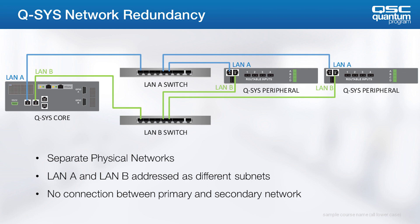The Q-SYS network redundancy feature is designed to keep audio flowing if there's an Ethernet switch failure on the primary network. That being said, the intention is not to plug LAN A and LAN B networks into the same set of switches.